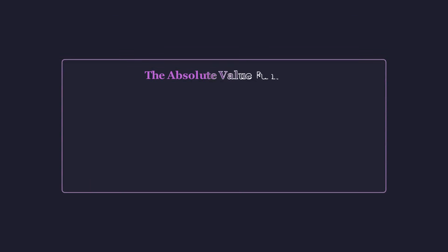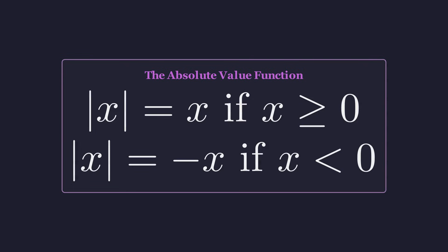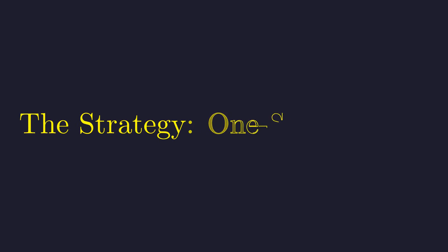The key is the absolute value of x. It is a piecewise function. If x is positive or zero, the absolute value of x is x. But if x is negative, the absolute value of x is negative x. Because the function's definition changes at x equals zero, we must approach zero from two separate directions.